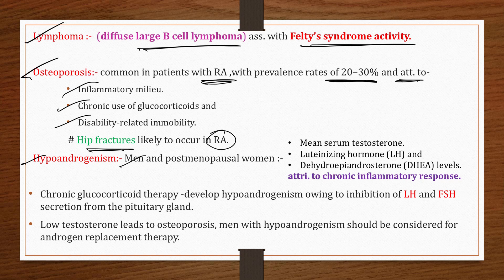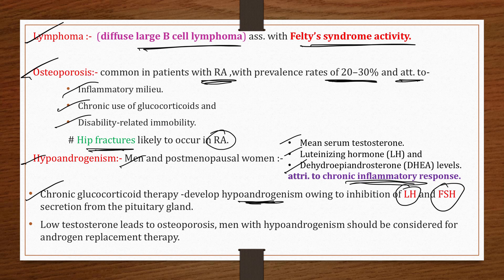Due to chronic inflammatory responses, there is a decrease in mean serum testosterone, luteinizing hormone (LH), and DHEA levels, causing hypoandrogenism in men and post-menopausal women. Chronic glucocorticoid therapy also contributes to hypoandrogenism by inhibiting LH and FSH secretion from the pituitary gland. Low testosterone leads to osteoporosis, so men with hypoandrogenism should be considered for androgen replacement therapy.